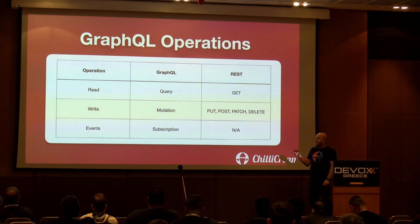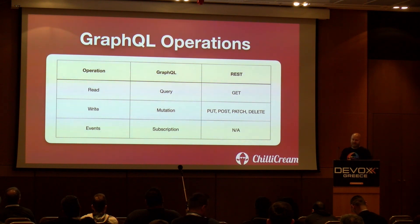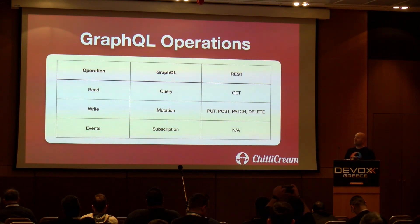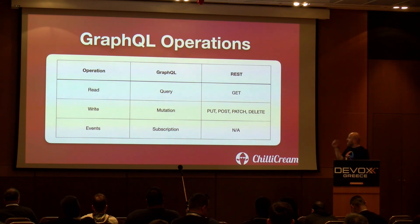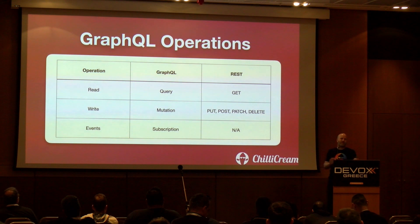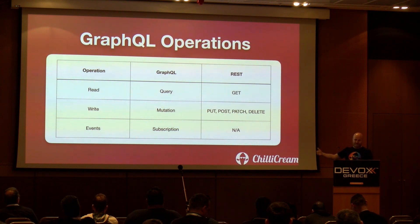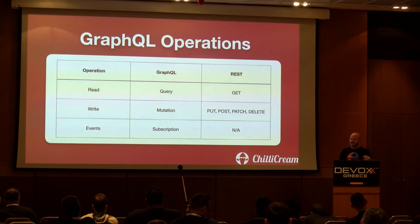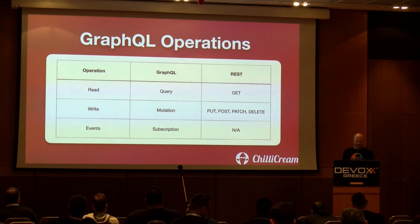In GraphQL we have three operations. First, a query operation — a read, the GET in REST, side-effect-free reads on your data model. Second, write operations called mutations — the PUT, POST, PATCH, DELETE in REST — which cause side effects to your system, whereas a query is side-effect free. Third, subscriptions — events in the system, our real-time capability. You don't have that natively in REST; you'd add WebSockets or SignalR as add-on technologies. In GraphQL, real time is designed into the spec.